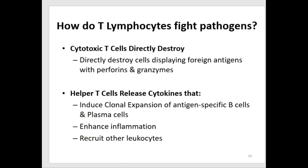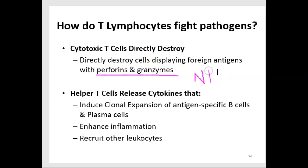Cytotoxic T cells can directly destroy one of our infected cells by using perforins and granzymes, just like natural killer cells. If you remember, natural killer cells in the resistance mechanisms could release perforins and granzymes to kill a cell. But cytotoxic T cells will only destroy cells that display a foreign antigen on MHC1.